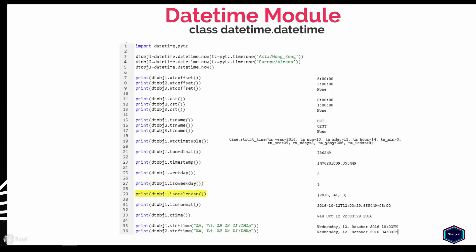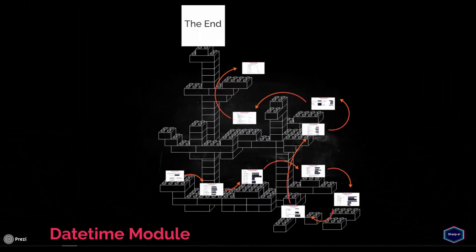The isocalendar method returns a triple consisting of year, week number, and weekday according to the ISO standard. The isoformat method returns a string representing the date and time in ISO 8601 format. The ctime method converts the datetime object into a 24-character string, as shown in this example. The strftime method returns a string representing date and time as specified by the format arguments. For a complete list of formatting directives, please go to the official Python documentation. I hope you now have a basic understanding of the datetime module. Thank you for watching this tutorial, and please subscribe to my channel for future tutorials.